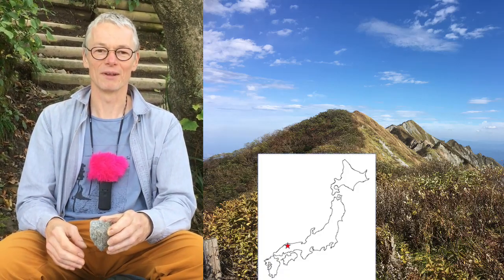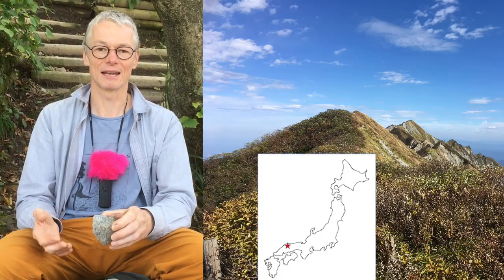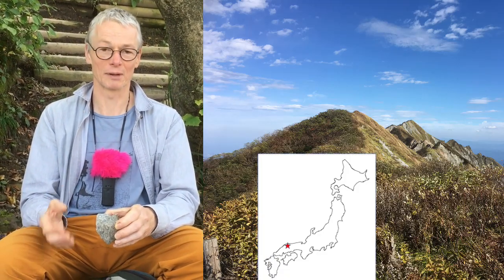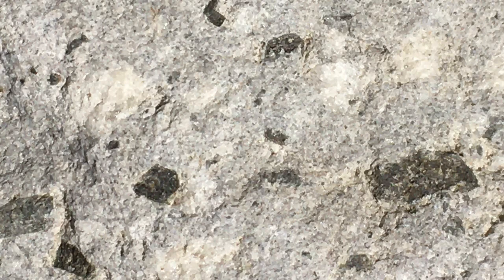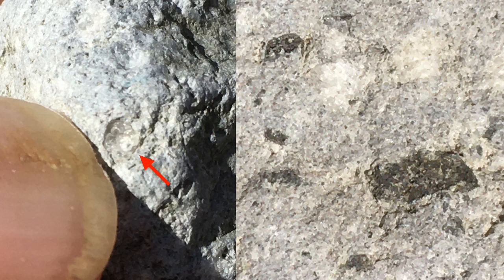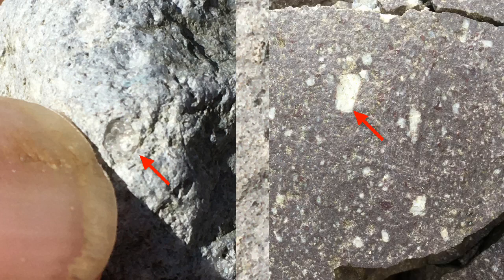We're on a Daisan volcano, which is dacite. Dacite is a silica-rich magma, so it contains quartz and feldspar, and typically black mica and also hornblende.